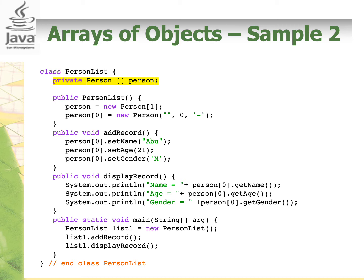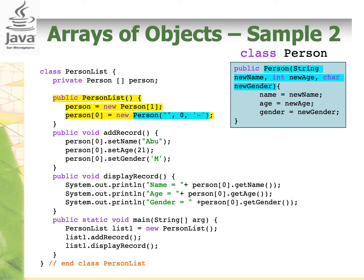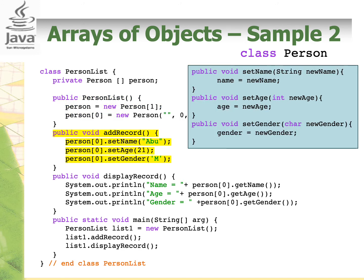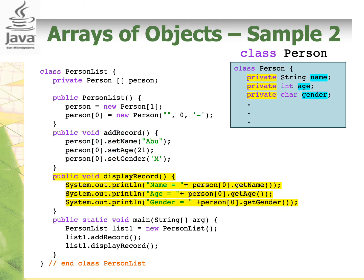Here we have a class called PersonList that creates an array of Person objects. We can declare the array as an instance variable of the class as highlighted here. We have a no-argument constructor where it creates an object of the array and invokes the Person constructor. From the previous code, we saw that the Person constructor takes in three arguments: String newName, int newAge, and char newGender. In the addRecord method, we want to reassign other values to name, age, and gender, so we call the setter methods and pass the new values. To display the values from Person class, we invoke the getter methods in the displayRecord method. We cannot access the instance variables name, age, and gender directly in the Person class because they are private — that's why we access them through the getters, which are public methods.